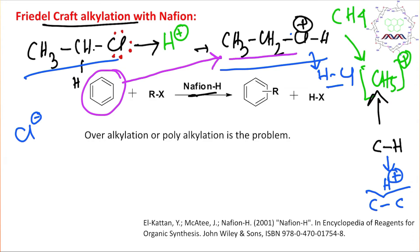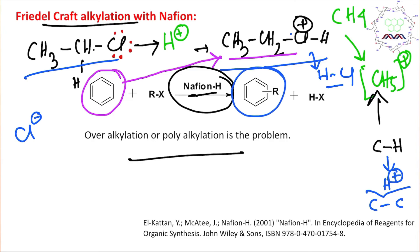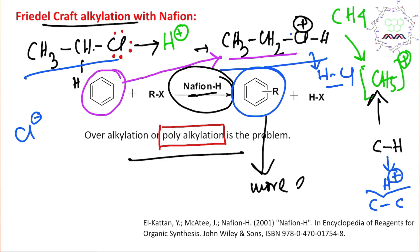That is why, using Nafion, you do not need a Lewis acid for Friedel-Kraft alkylation. However, the main problem remains polyalkylation or overalkylation, which is a typical problem for direct Friedel-Kraft alkylation. That is why alkylbenzenes are better prepared via Friedel-Kraft acylation followed by reduction of the carbonyl derivative — after acylation, the electron density of the ring decreases, preventing further reaction. In direct alkylation, the product is more electron-rich and more reactive than the reactant, causing overalkylation.